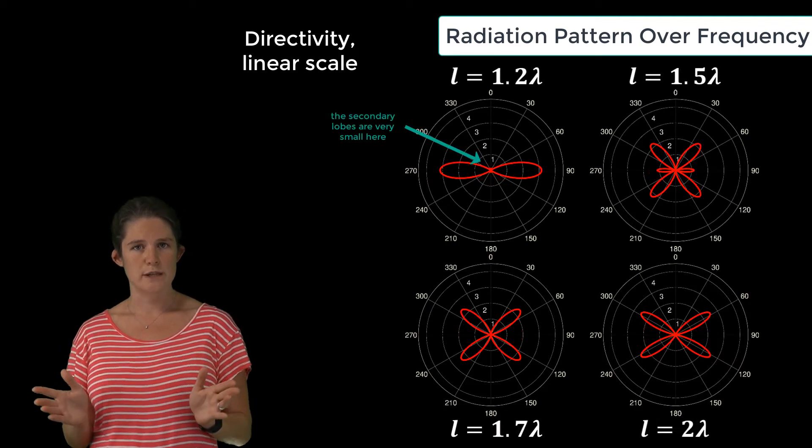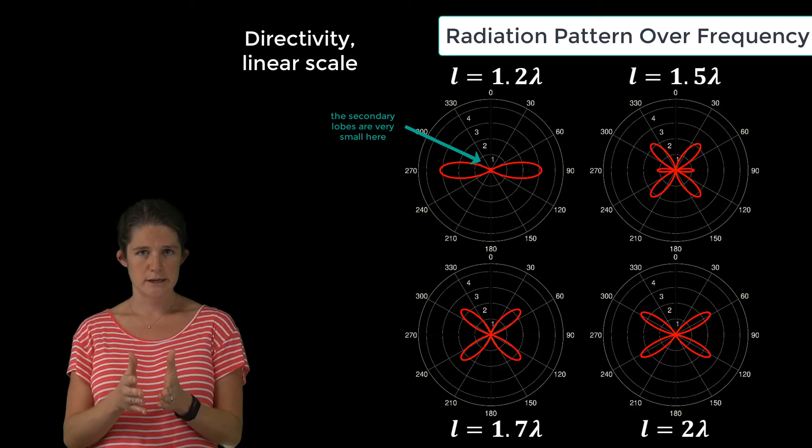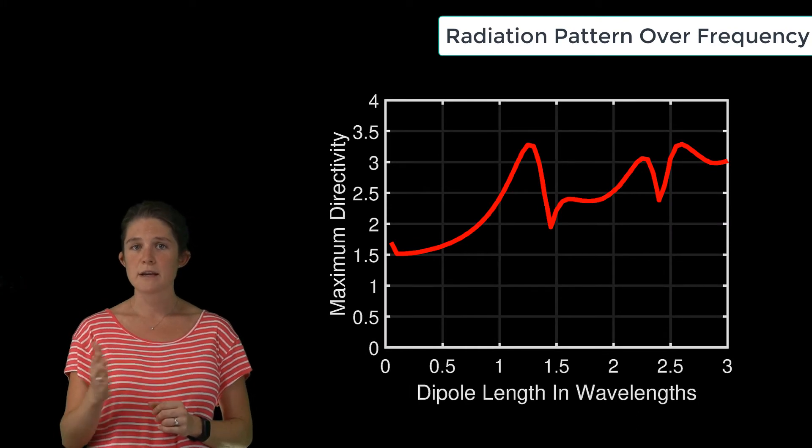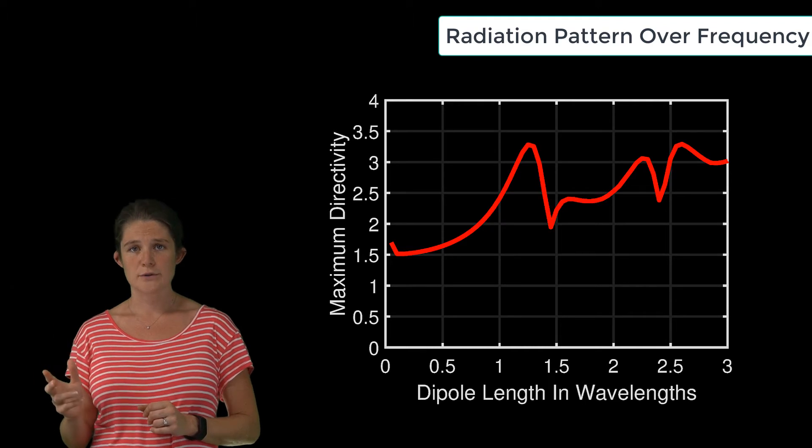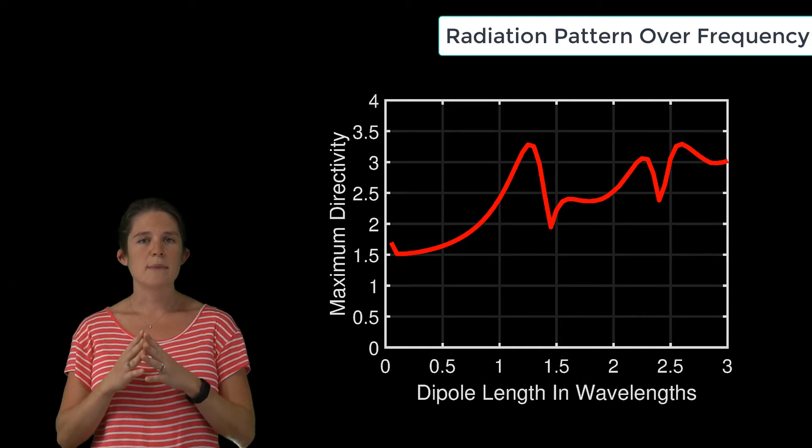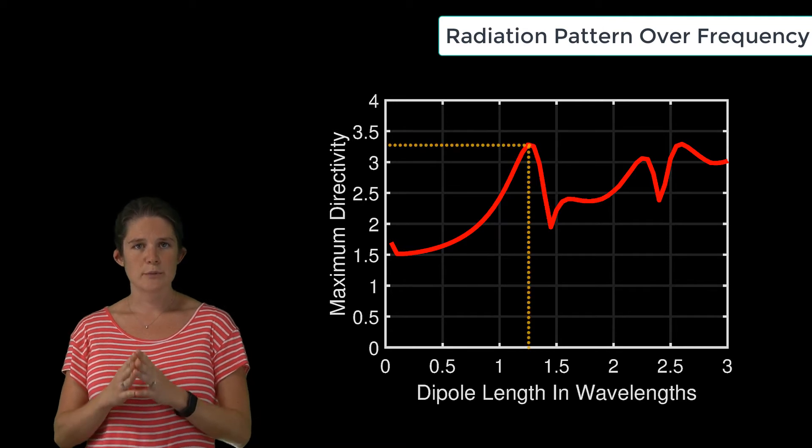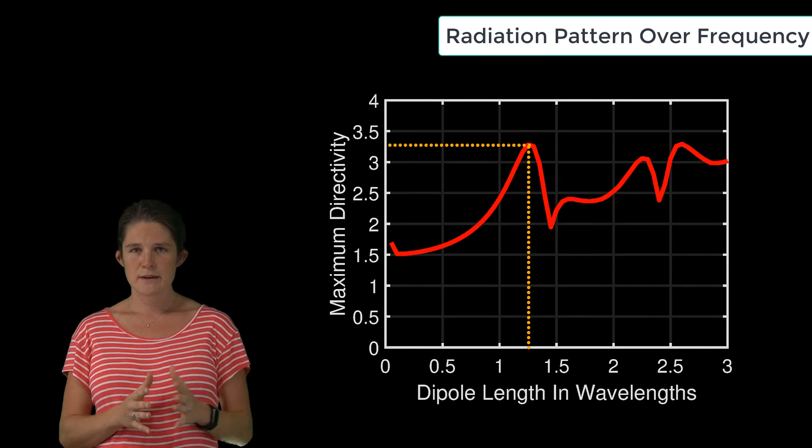At frequencies above this range, there are more lobes than one and the radiated power is no longer focused broadside. So here's a plot of the maximum directivity observed in any direction over a range of frequencies up to L equals three wavelengths. The maximum directivity observed in this range is approximately 3.3 and occurs at L equal one and a quarter wavelengths.